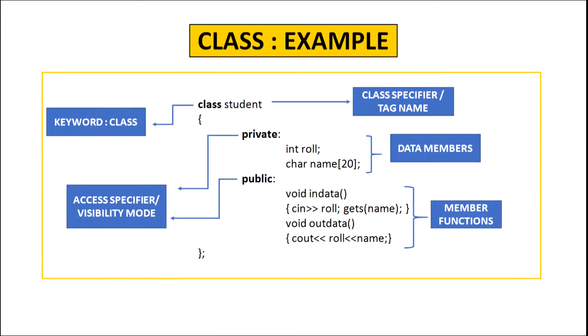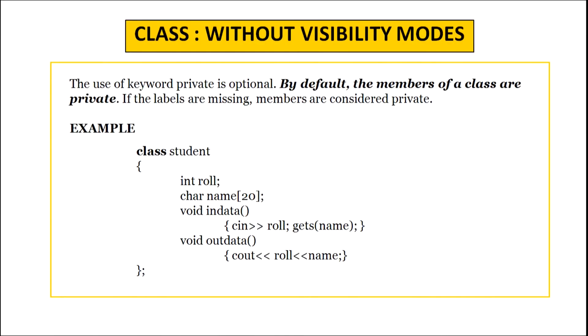We will talk about inheritance later. Now let us take an example of the class student. We will start with the keyword class followed by the name of the class, which is student, also called tag name or class specifier. The data members — role number and name — are kept in the private visibility mode, and the member functions in data and out data are kept in public visibility mode. If we define the class without any visibility mode, then by default it is taken as private, and such a class is completely hidden from the outside world.